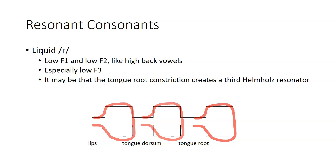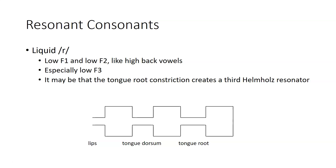Given these three constrictions, the articulation of R is pretty complicated, much like L, and these are some of the articulations that are learned last by children learning English, or are hardest for non-native speakers of English to learn unless they already have these sounds in their language.